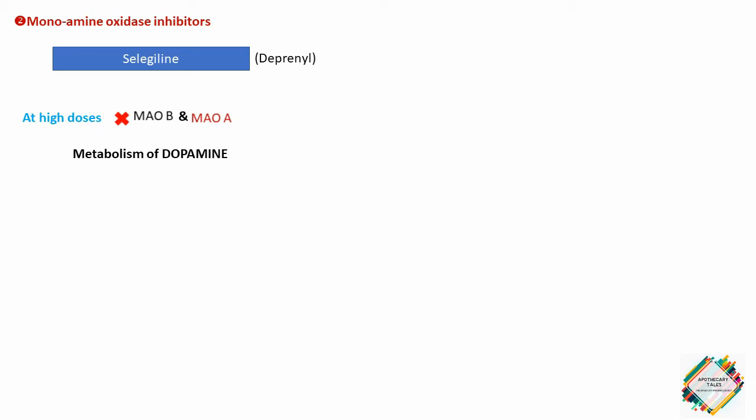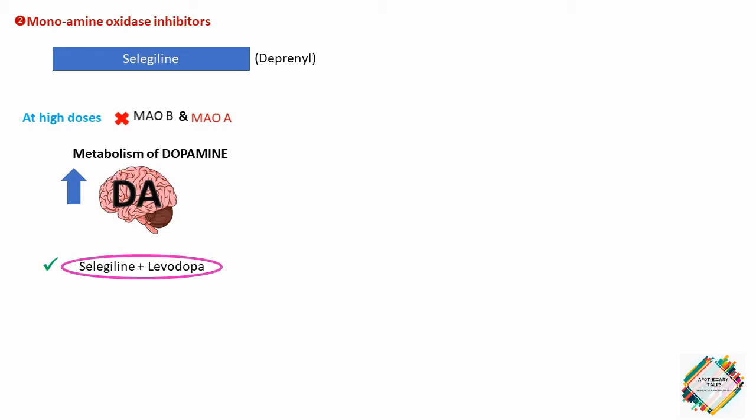By decreasing the metabolism of dopamine, selegiline increases dopamine levels in the brain. When selegiline is administered with levodopa it enhances the action of levodopa and substantially reduces the required dose. Unlike non-selective MAO inhibitors, selegiline at recommended doses has little potential for causing hypertensive crisis. However, the drug loses selectivity at high doses and there is a risk for severe hypertension.